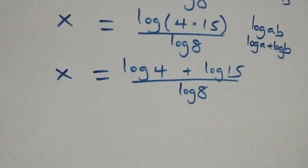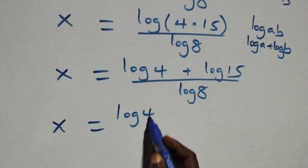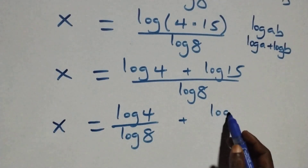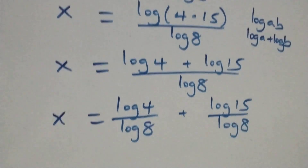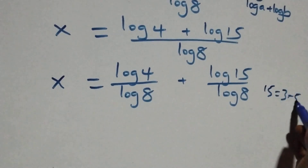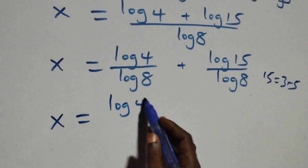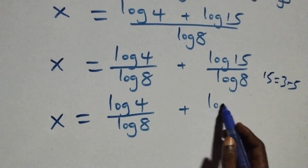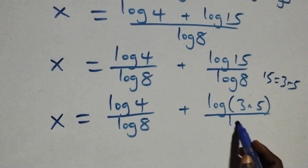The next step here, we separate this into two fractions. And we have x equals to log 4 over log 8 plus log 15 over log 8. Then also here, we can rewrite 15 as 3 times 5.